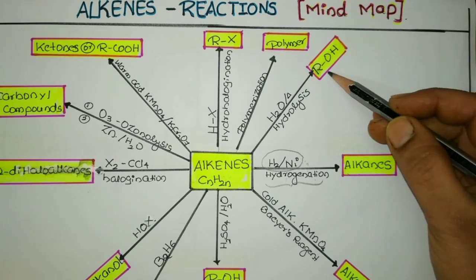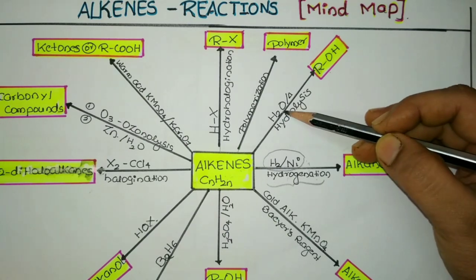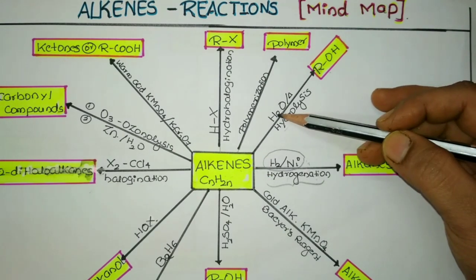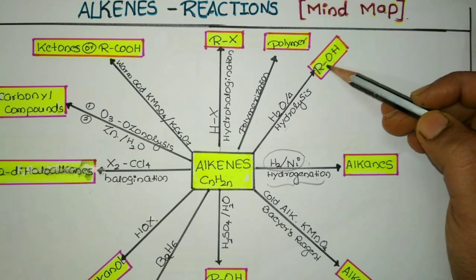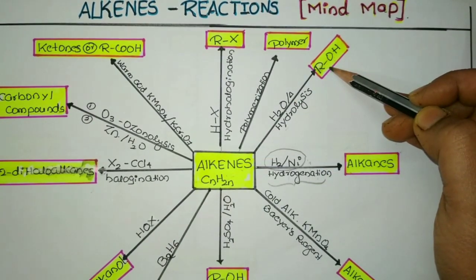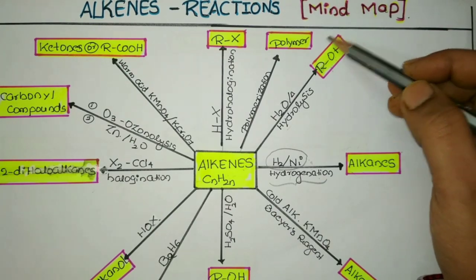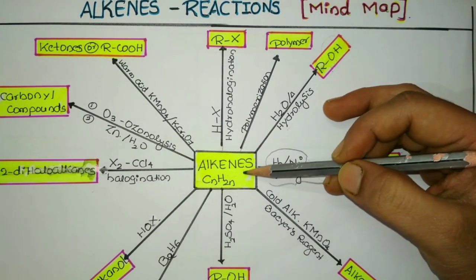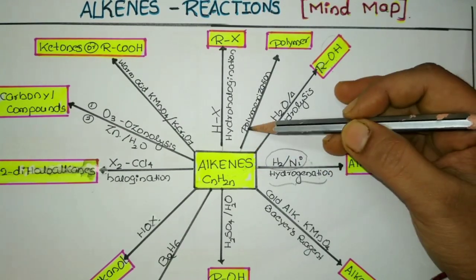Next, when alkenes are treated with water, the reaction is called hydration — addition of water. When alkenes are treated with water and heated, they give alcohol. Conversely, dehydration means removal of water from alcohol to give alkenes back. So hydration gives alcohol and dehydration gives alkenes — they are reverse reactions of each other.